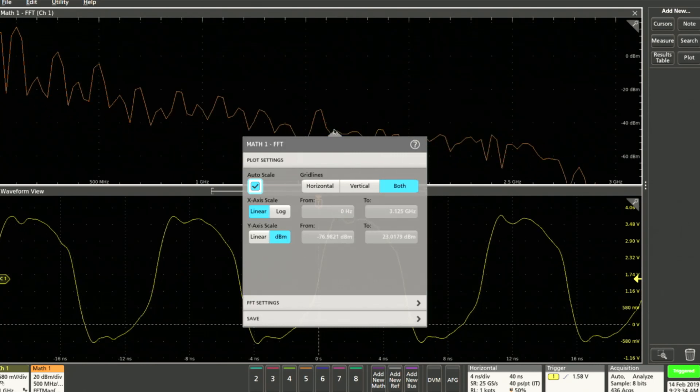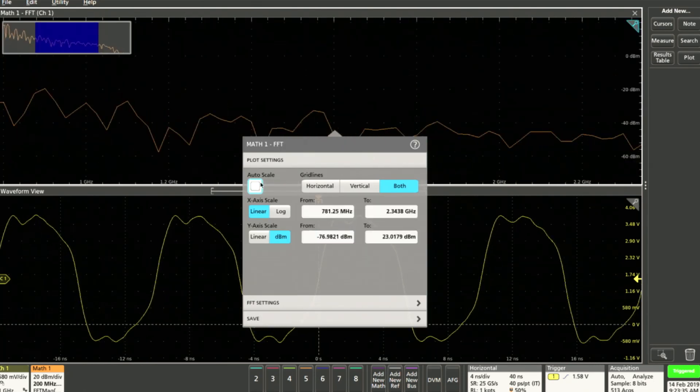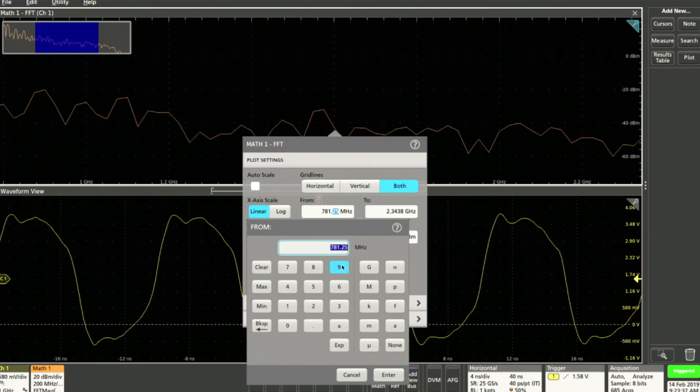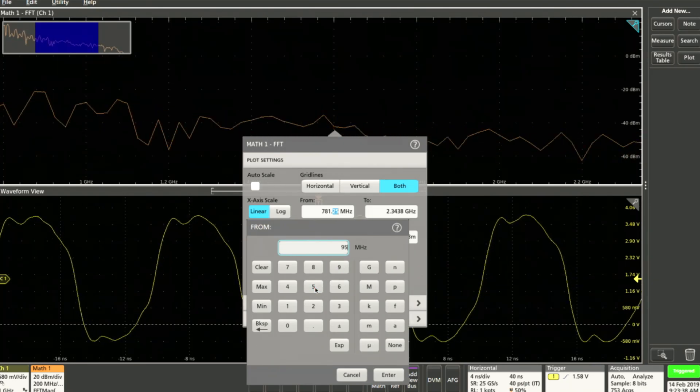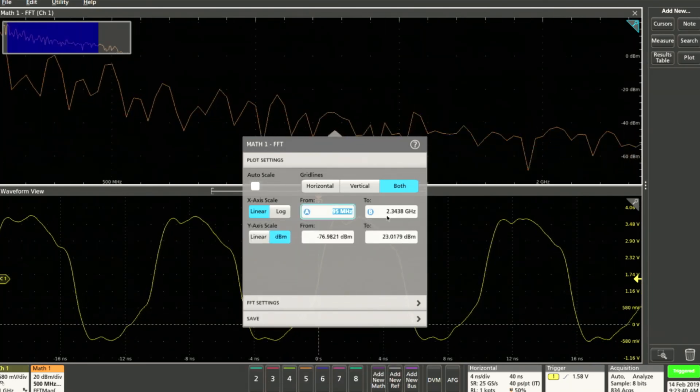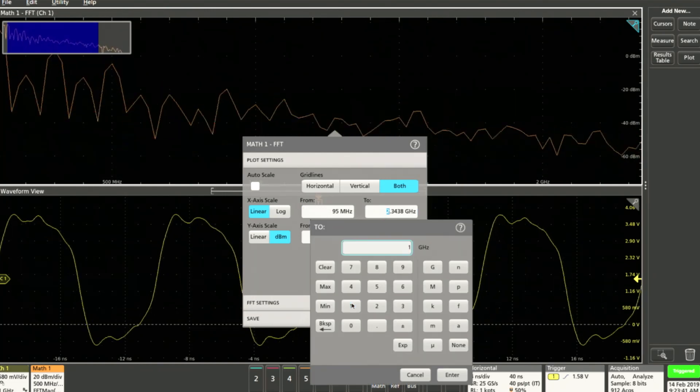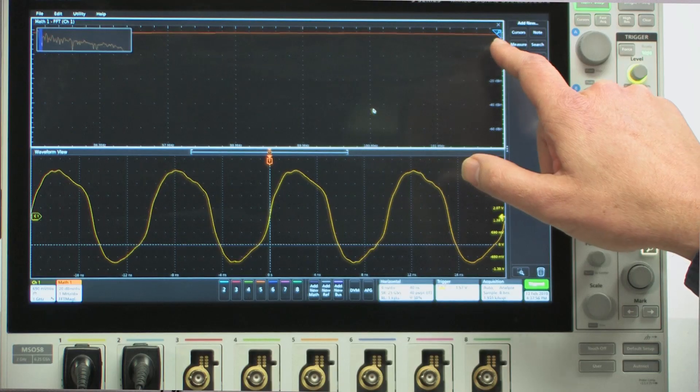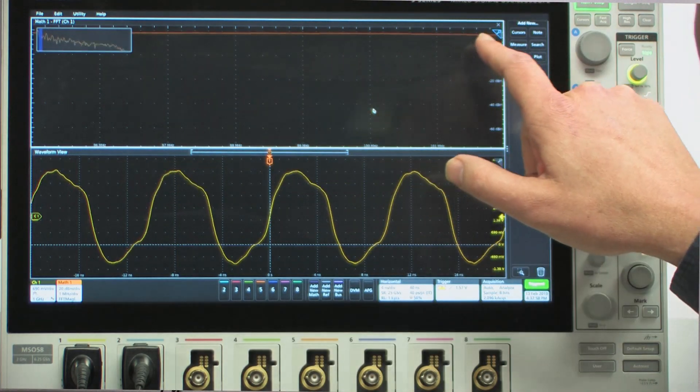But I'm not really interested in the entire spectrum. I'm really just interested in the frequency range of the spread spectrum clock, so I'm going to change my view from 95 megahertz to 102 megahertz, and this is our resulting FFT display.